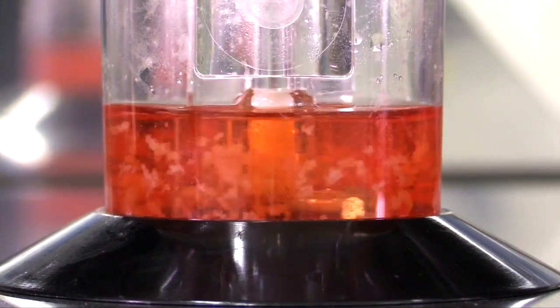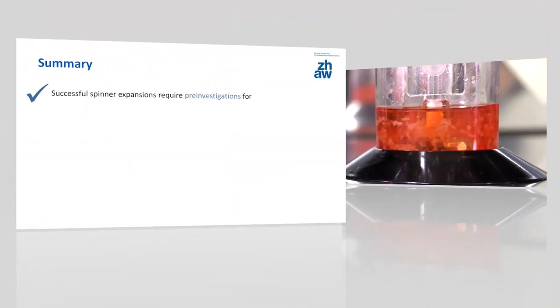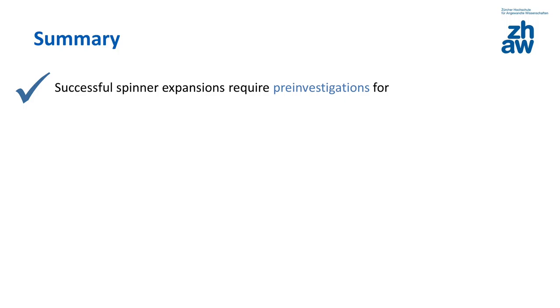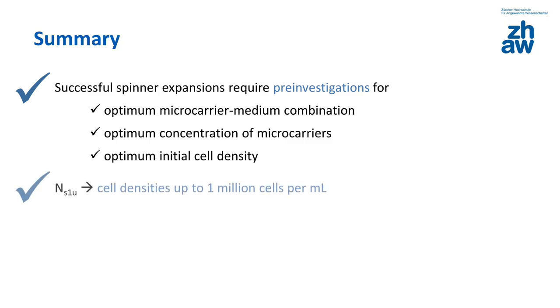As explained in video number 5, the harvested cells are subjects of quality control. Successful spinner expansions of MSCs entail pre-investigations in which the optimum microcarrier-medium combination and main cultivation parameters such as concentration of microcarriers and cells have to be defined. When operated at the NS1U criterion, cell densities up to 1 million cells per milliliter are achievable in serum-supported fed batch cultivations within 6 days. The NS1U criterion is the lower limit of the NS1 criterion that was defined by Zwietering in the 50s and represents the just-suspended impeller. A 60% medium exchange between cultivation day 3 and 4 is common in the majority of expansions of HMSCs today.